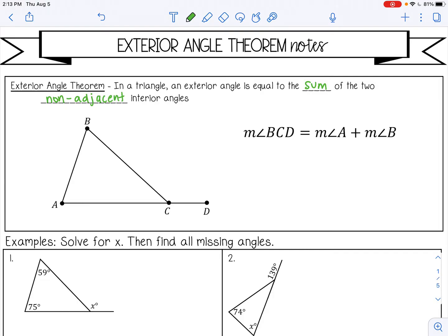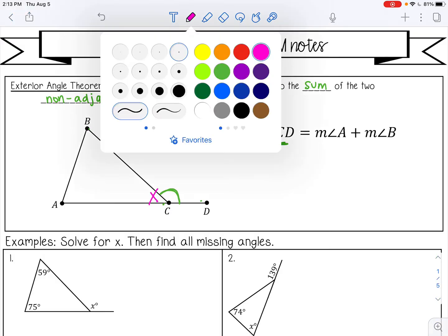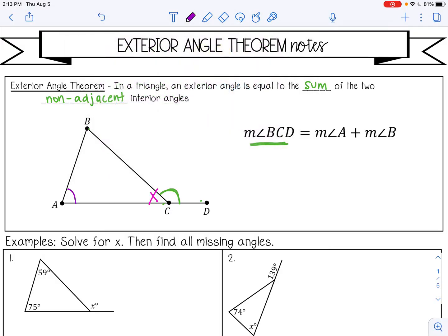So basically, if I want to find the measure of this exterior angle, exterior means it's outside the triangle, that would be the measure angle BCD, then I can add the two interior angles, but not this one because that's adjacent. We want the ones that are not adjacent, so I can add this one, A, and this one, B.